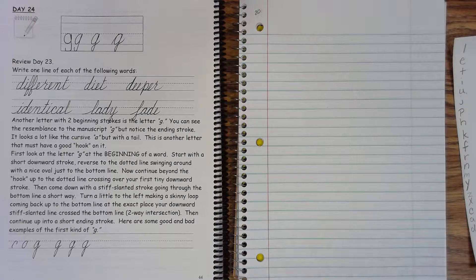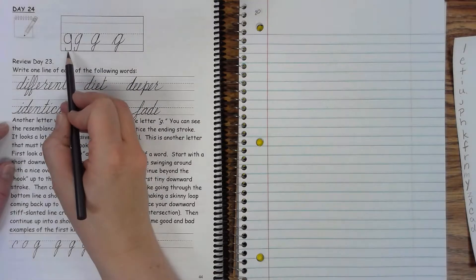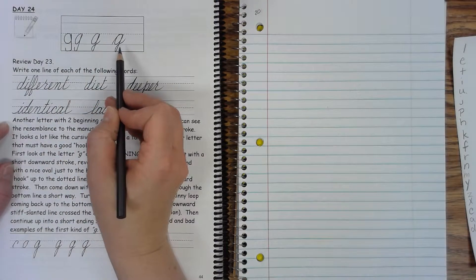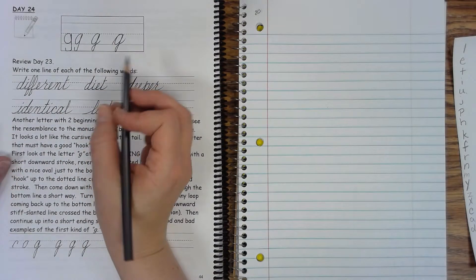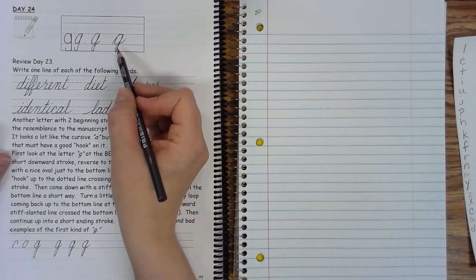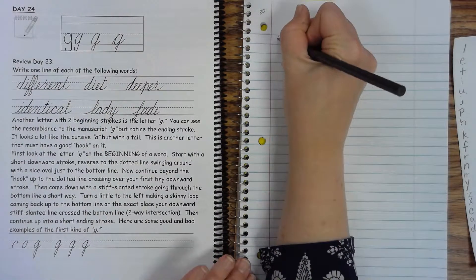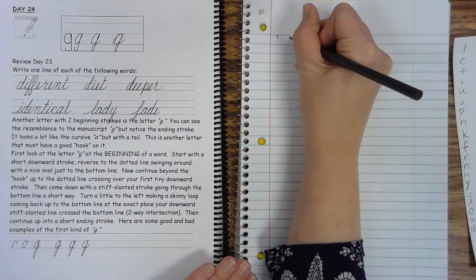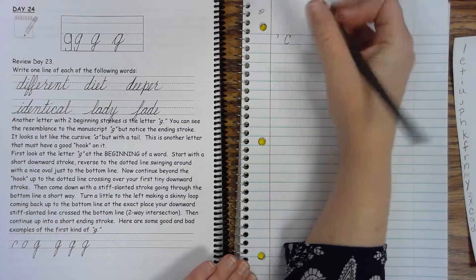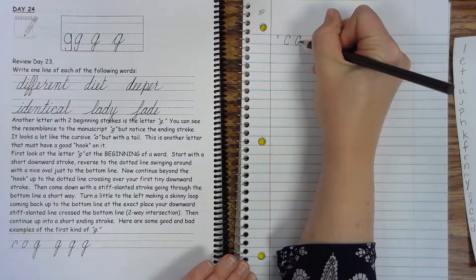Lesson 20 is the letter G. This is the progression from print to cursive. It looks very similar to the Q. The only difference is this bottom part, and we'll learn the Q a little bit later. So you start this essentially the same way as you start your C and your A and your D, which is why they're all here together in a row.